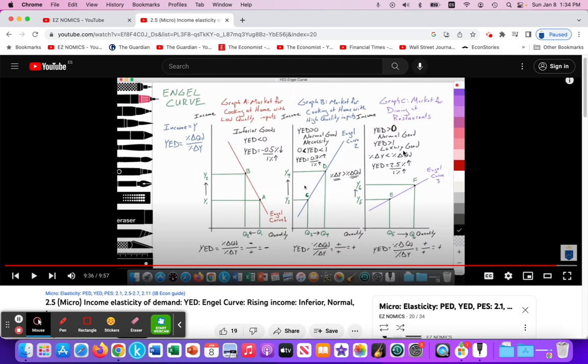And we looked at two types of normal goods, one being necessity, the other being a luxury. So I'm going to use the same examples here of market demand or household spending on cooking at home with low quality ingredients.